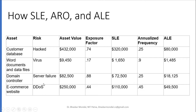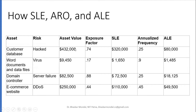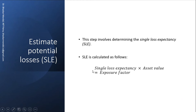Based on all these parameters, the enterprise — who are the data keepers, basically who holds the information — they assign the asset value. From the previous year's data, how much it has been exposed to attacks and outsiders, they find out the exposure factor. Then SLE is calculated as: SLE equals exposure factor multiplied by asset value.